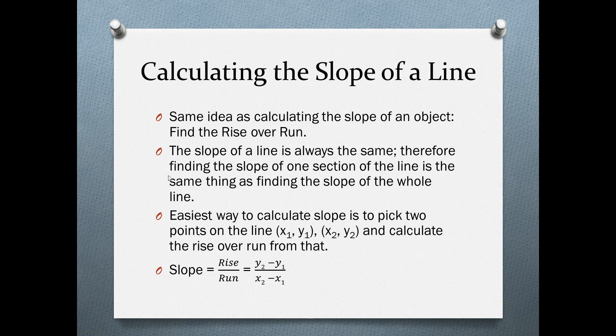Calculating the slope of a line. Calculating the slope of a line is the same idea as calculating the slope of an object. The slope of a line is always the same, so finding the slope of one section is the same as finding the slope of the whole line. The easiest way is to pick two points — x1, y1 and x2, y2 — and calculate rise over run. Slope equals (y2 minus y1) over (x2 minus x1).